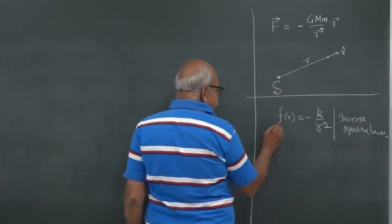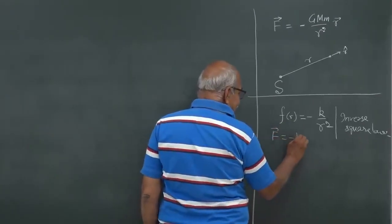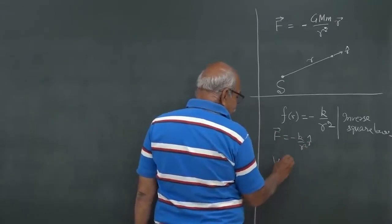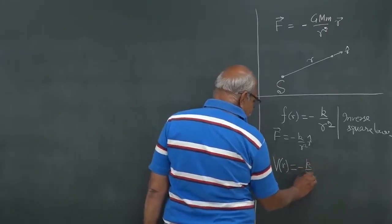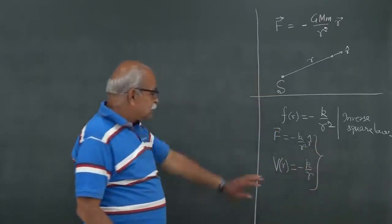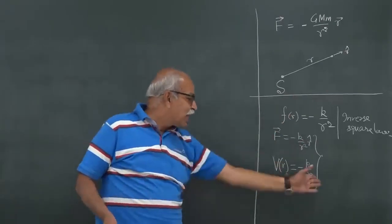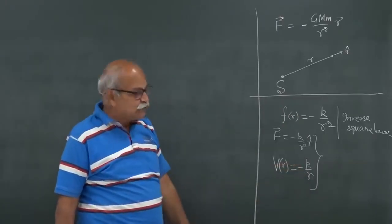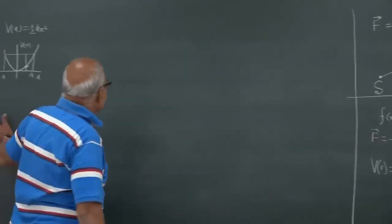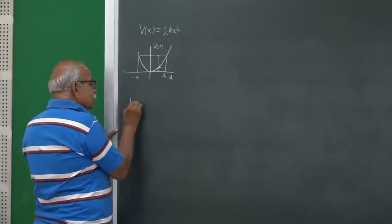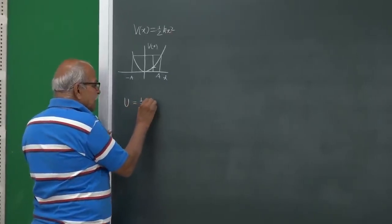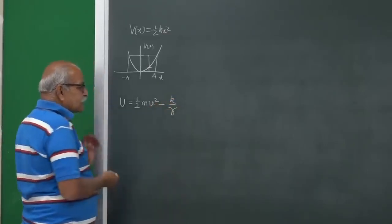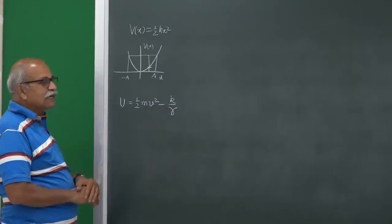For central force motion with force F = -k/r² r̂, the potential is V(r) = -k/r. We write the total energy U = ½mv² + V(r) = ½mv² - k/r. The velocity vector in polar coordinates is v = ṙ r̂ + rθ̇ θ̂, which was derived in the previous lecture.